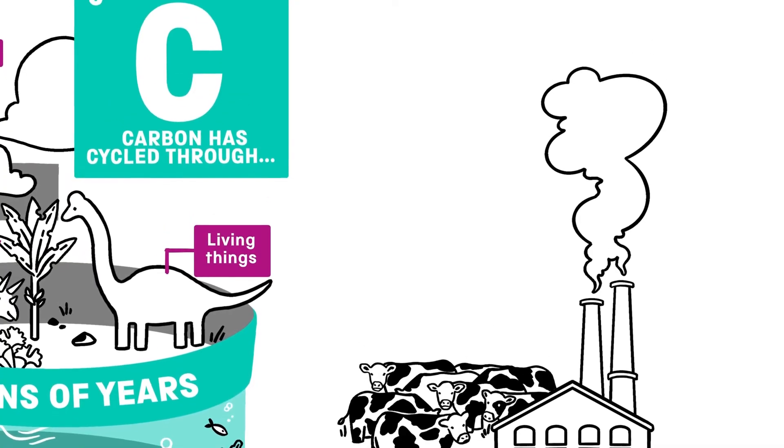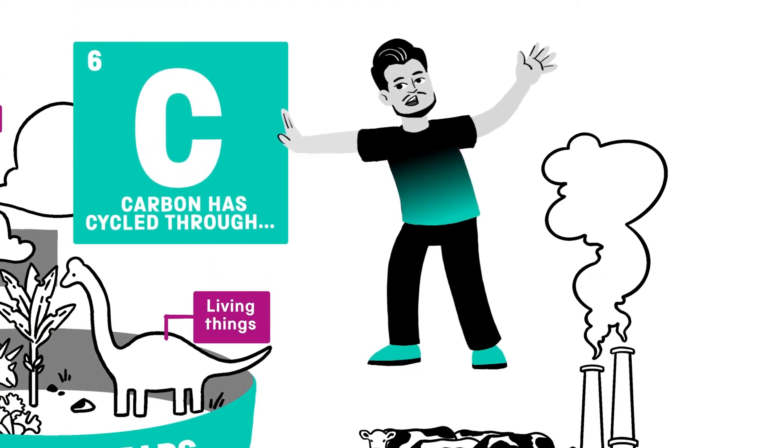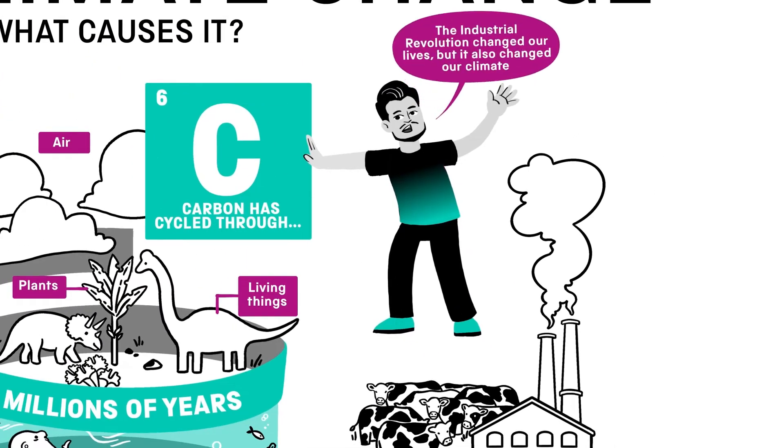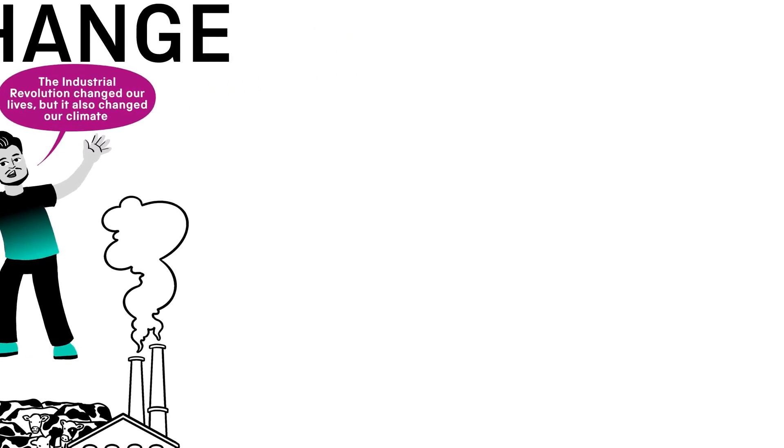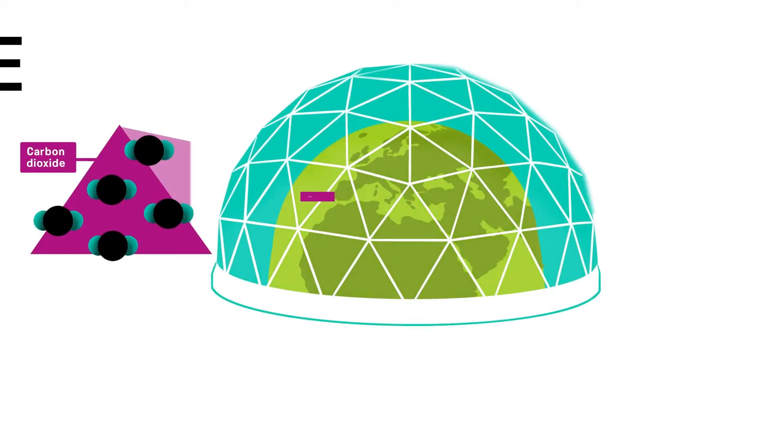Today, much of our modern way of life still depends on fossil fuels. The Industrial Revolution changed our lives, but it also changed our climate. Burning fossil fuels creates carbon dioxide, a gas that traps heat from the sun.